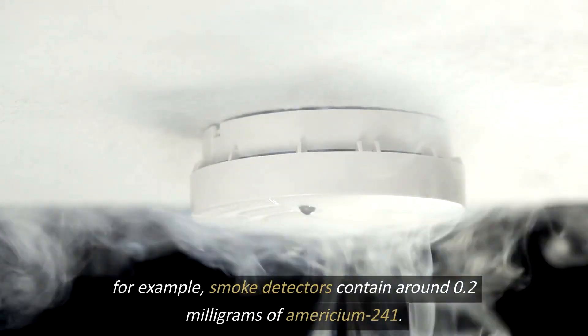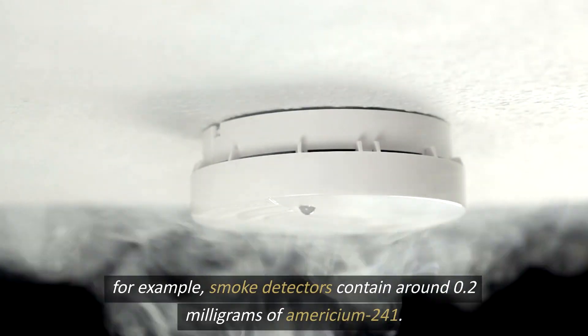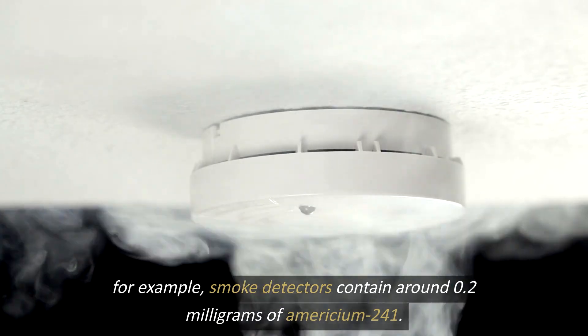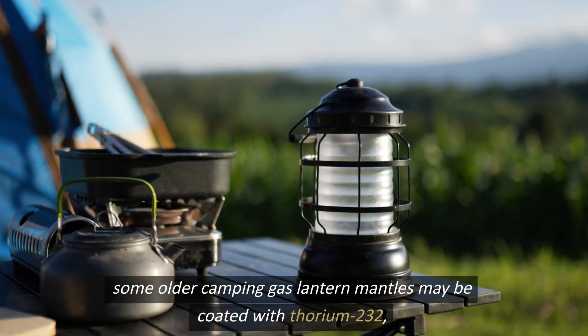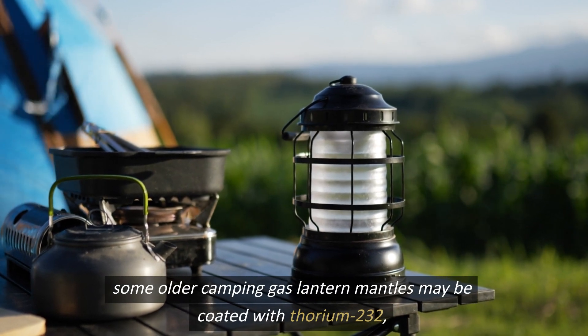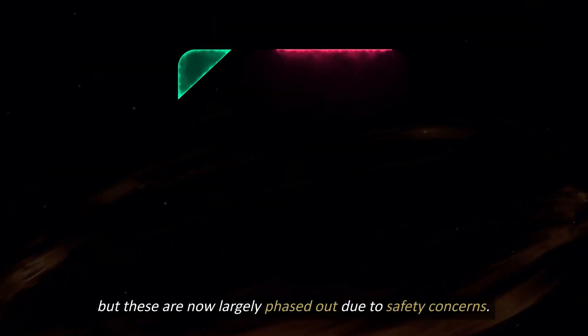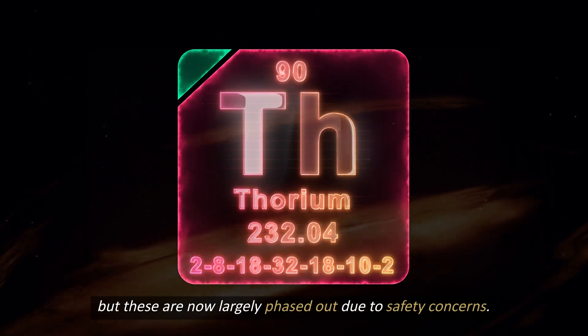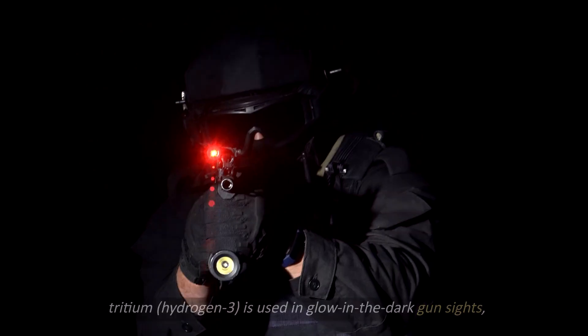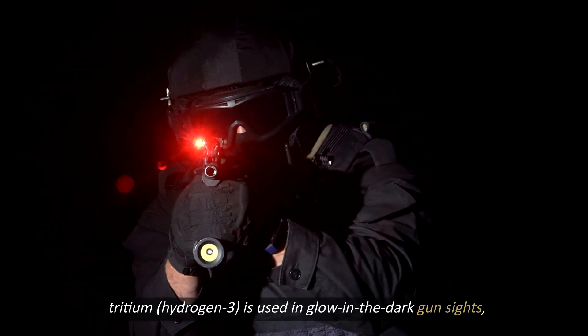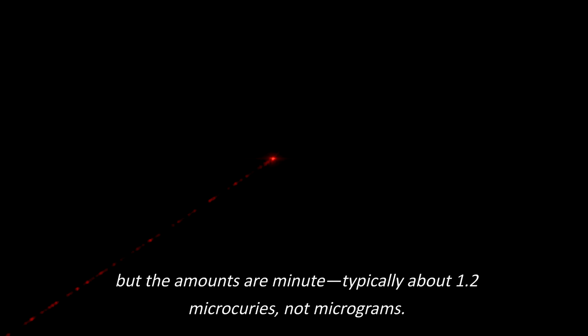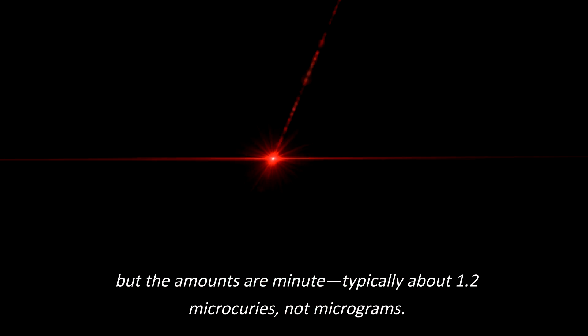For example, smoke detectors contain around 0.2 milligrams of americium-241. Some older camping gas lantern mantles may be coated with thorium-232, but these are now largely phased out due to safety concerns. Tritium-hydrogen-3 is used in glow-in-the-dark gun sights, but the amounts are minute, typically about 1.2 microcuries, not micrograms.